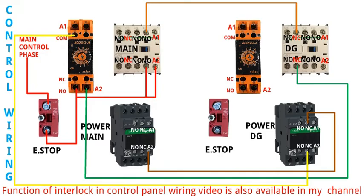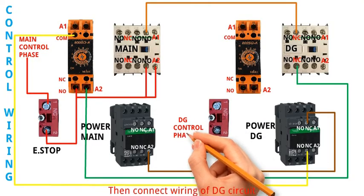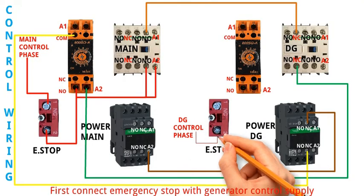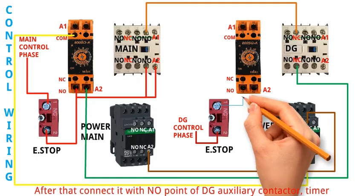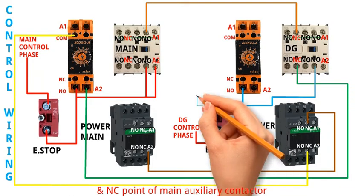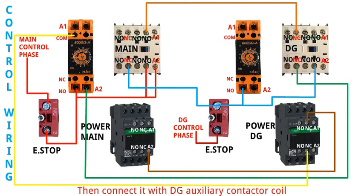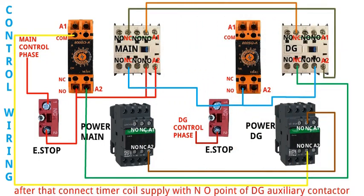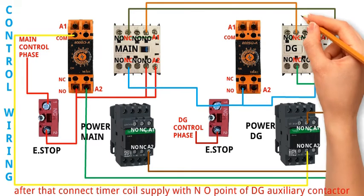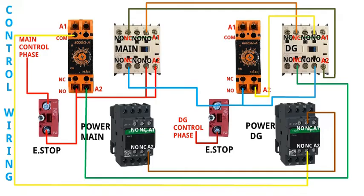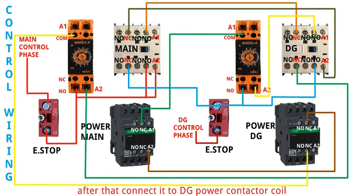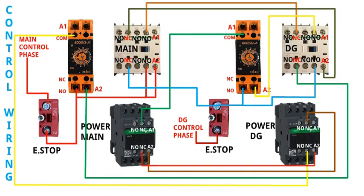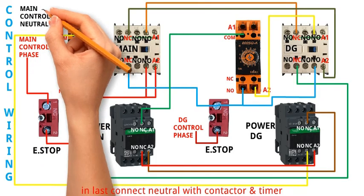The function of interlock in control panel wiring video is also available on my YouTube channel. Now connect the wiring of the DG circuit. First connect the emergency stop with the generator control supply. After that connect it with the NO point of DG auxiliary contactor, timer, and NC point of main auxiliary contactor. Then connect it with the DG auxiliary contactor coil. After that connect the timer coil supply with the NO point of DG auxiliary contactor. Then connect a wire from DG timer to the main power contactor NC point. After that connect it to the DG power contactor coil.